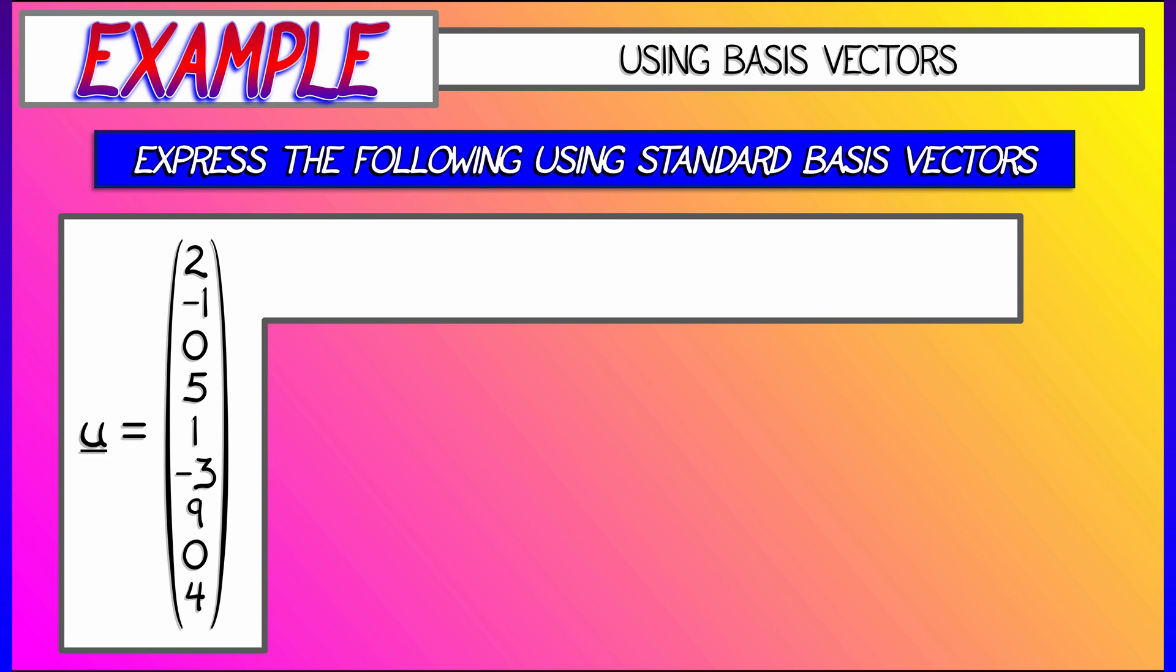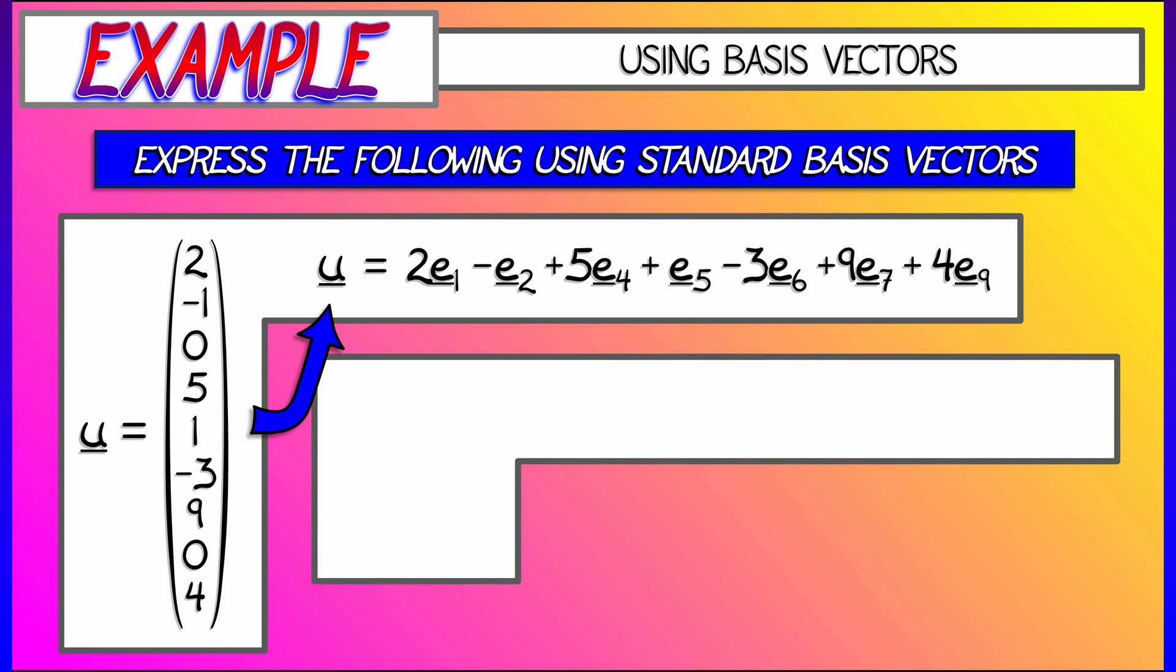So what we're going to do is write that as a linear combination of those e sub k vectors. So u is 2e1 minus e2 plus 5e4 plus e5 minus 3e6 plus 9e7 plus 4e9. There we go, got them all. Oh wait, I missed the e3 term. Oh no, wait, that's okay, because the coefficient was zero. Likewise with e8. That is a nice way to write out that vector horizontally as a linear combination.